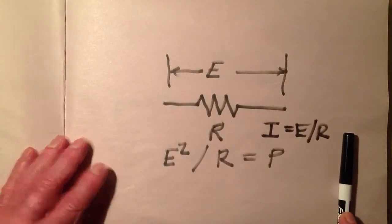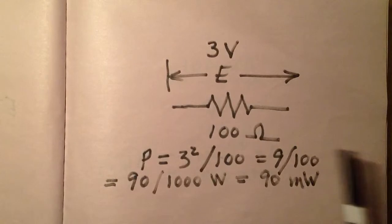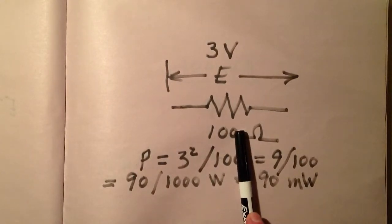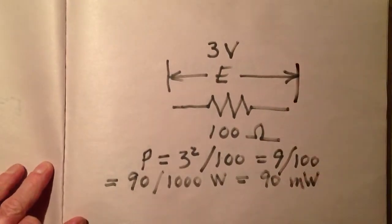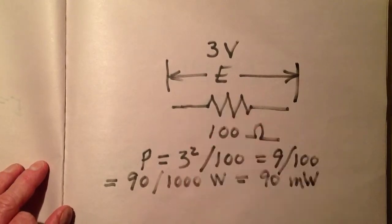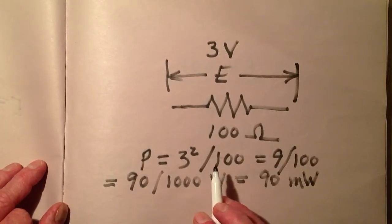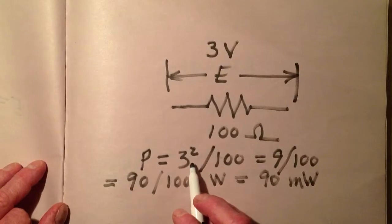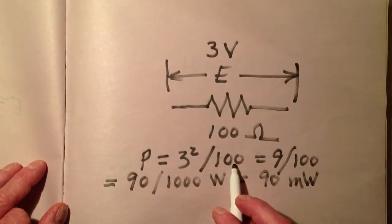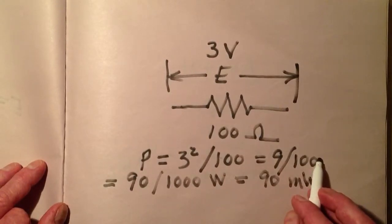Knowing all of this, let's take a practical problem. Suppose that we have a resistor of 100 ohms and 3 volts appears across that resistor — we measure that voltage, it's 3 volts, a 100 ohm resistor. How much power is that resistor dissipating in a DC circuit? All we need to do is square the voltage in volts and divide by the resistance in ohms. That's 3 squared over 100, which equals 9 over 100.